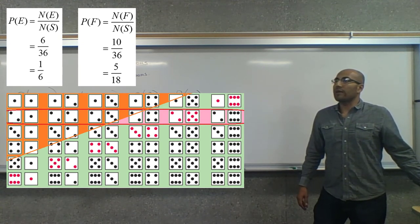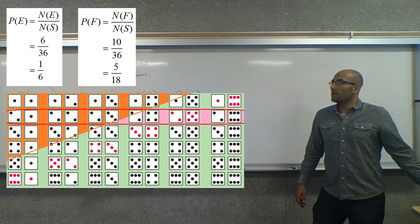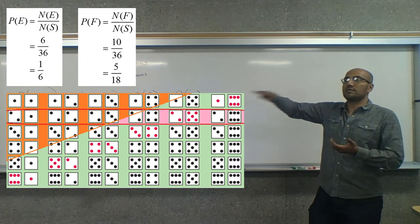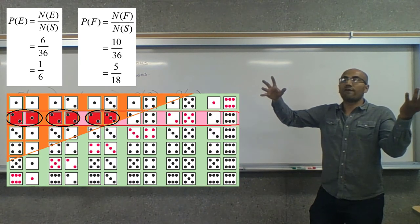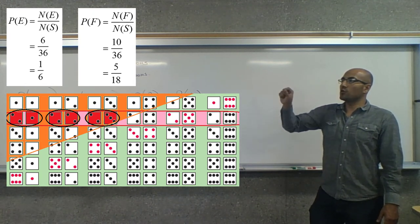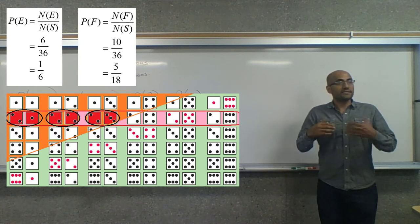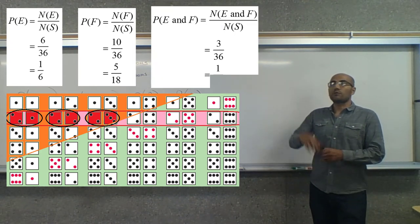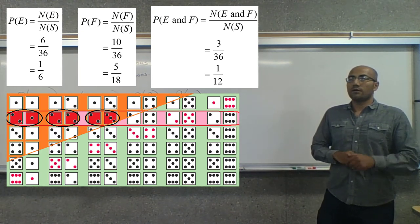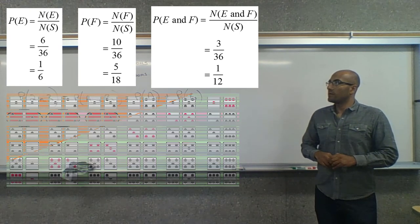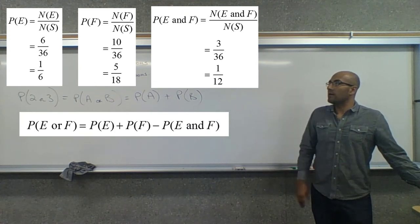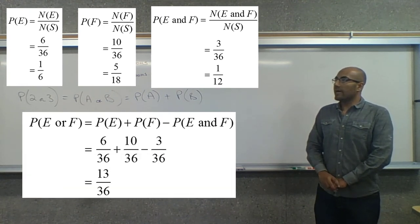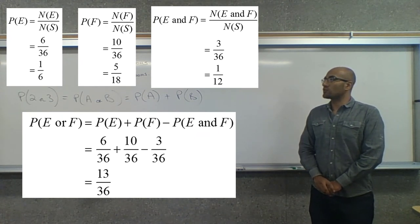Finally, we find all ways both can happen at the same time. For event E the first die was two, and we need the sum to be five or less. That gives us the first three in the second column: two-one, two-two, and two-three. Those three results satisfy both conditions. So the probability of E and F equals 3 out of 36. Applying our general formula: 6 over 36 plus 10 over 36 minus 3 over 36 gives a total of 13 out of 36.